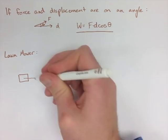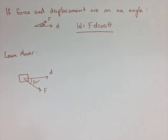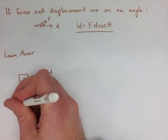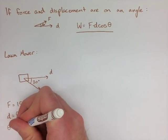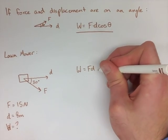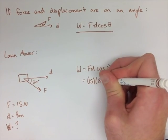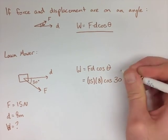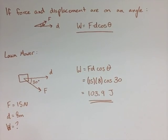So in our lawn mower question, we have a displacement straight forward and we're pushing down at an angle of 30 degrees. Our force is going to be 15 newtons, our displacement is 8 meters, and we need to find out what our work is. So we have force times displacement times cos theta, and we end up with an answer of 103.9 joules.